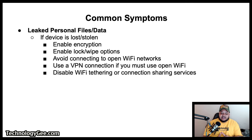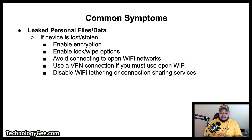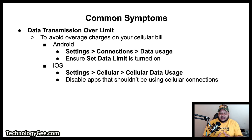For leaked personal files and data — if a mobile device is lost — make sure encryption is enabled, have options to lock or wipe the device enabled, avoid connecting to open Wi-Fi networks, use a VPN connection if you must use an open Wi-Fi network, and disable Wi-Fi tethering or connection sharing if not in use.